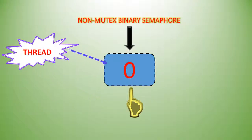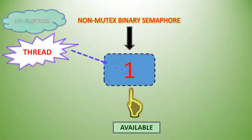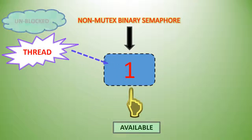When the semaphore is released, or made available — meaning the value is one — the thread which was blocked comes out of the waiting state and gets into the ready-to-run state.